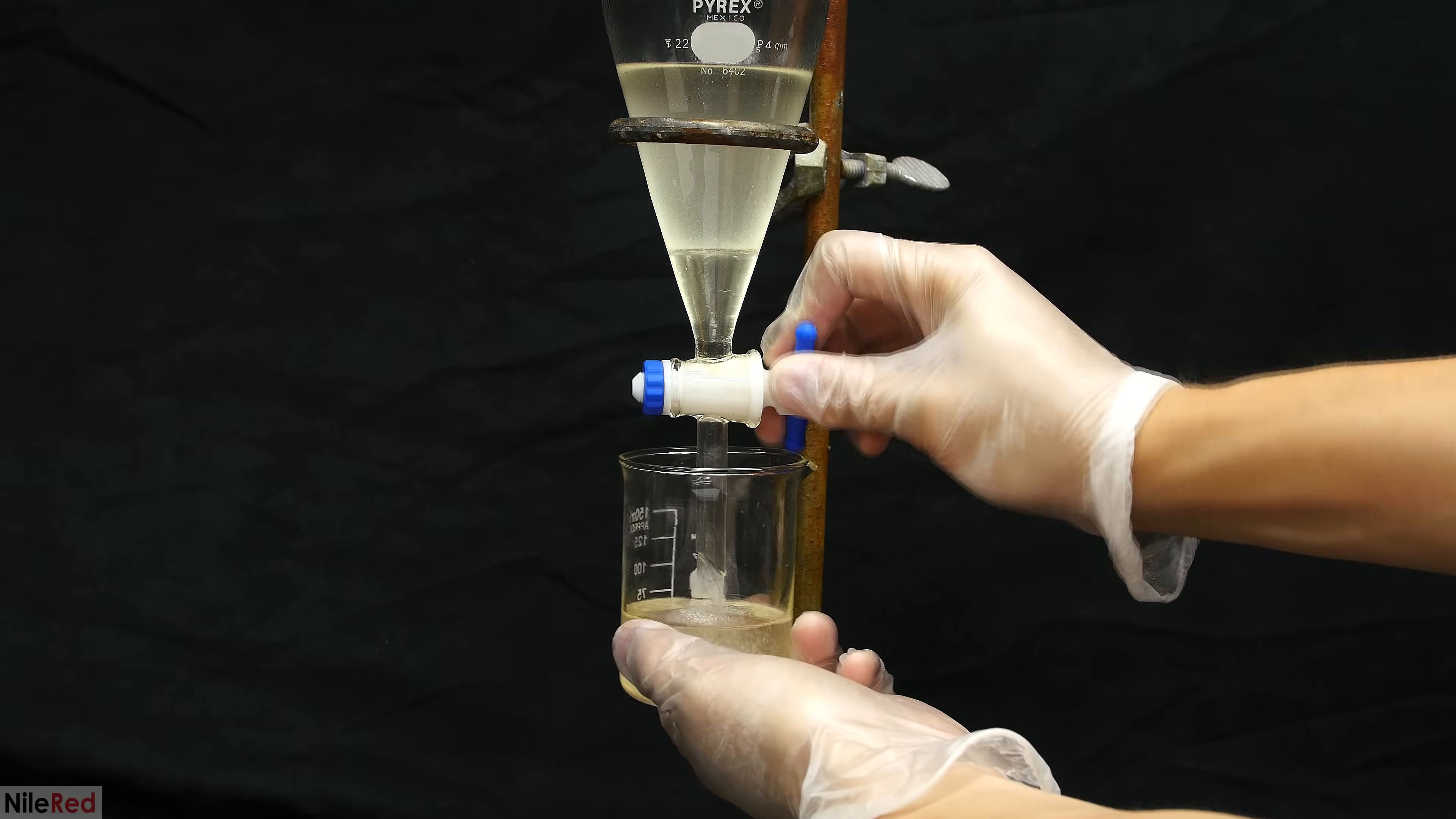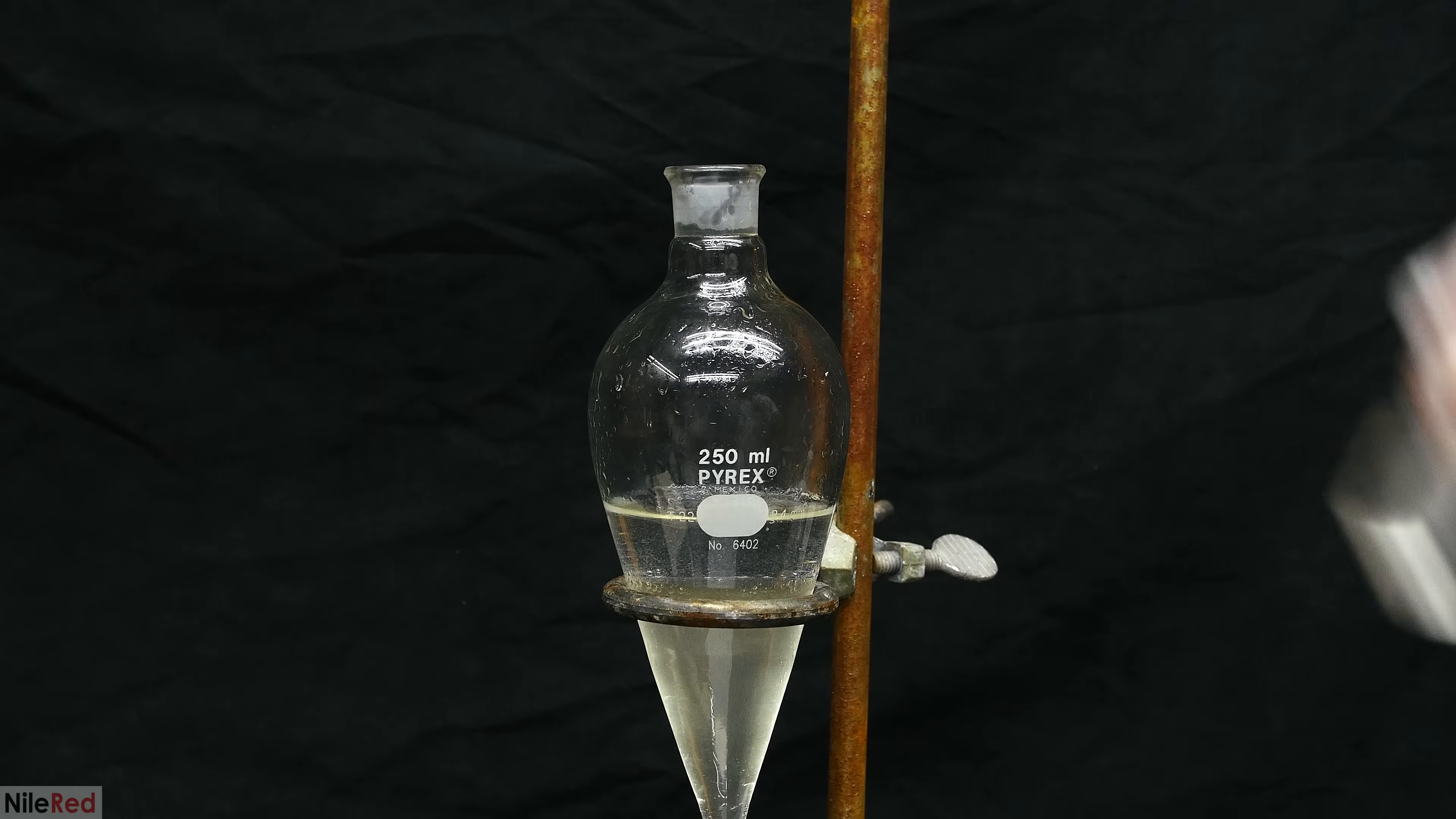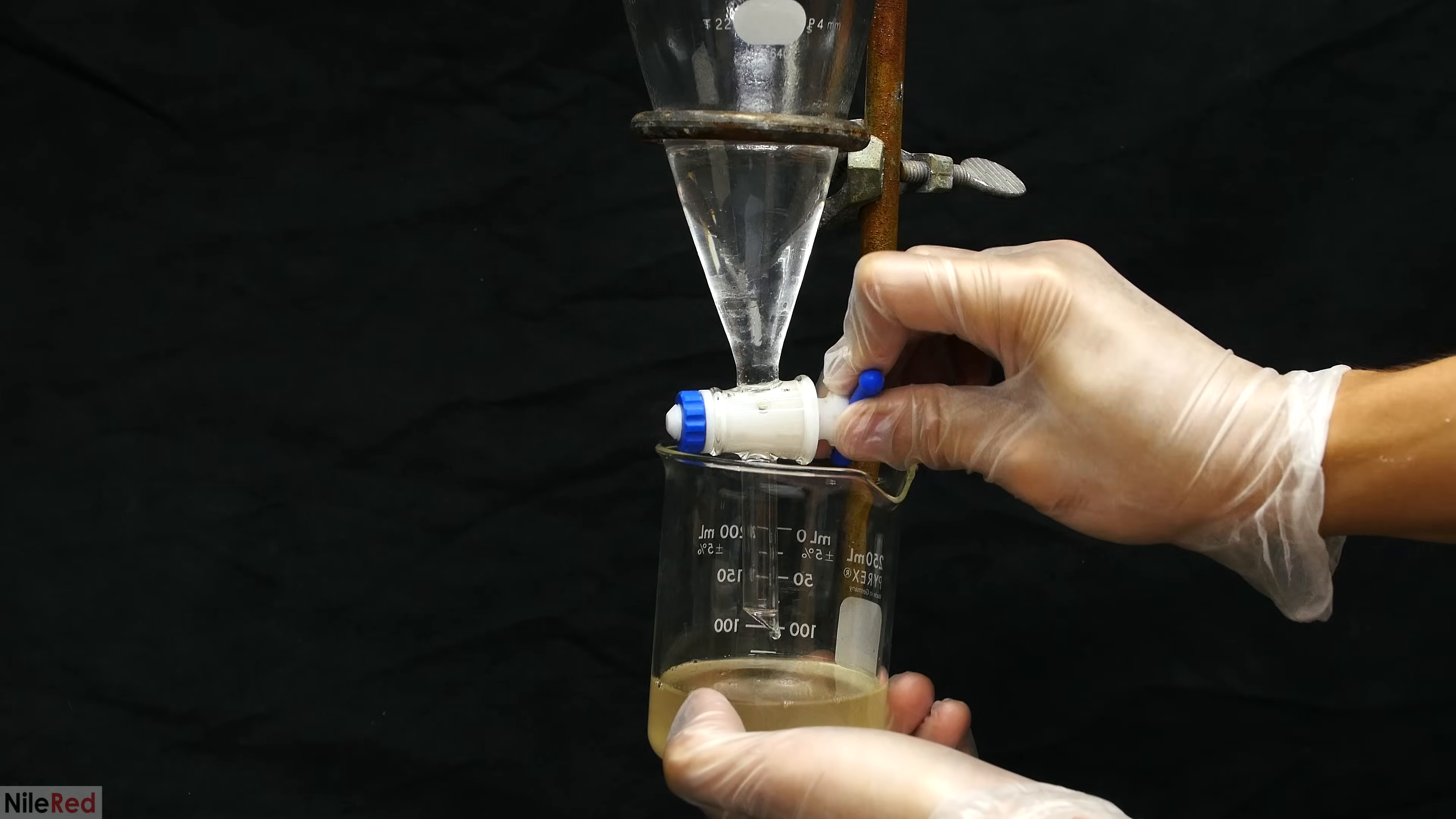Once the layers have separated, I drain off the lower DCM layer and I dispose of the upper basic aqueous layer. Again, the separatory funnel is cleaned, and I pour back in the anisole DCM solution. On top of this, we add in 50 milliliters of water. The purpose of this step is to wash out any phenol that still might be left behind. Phenol is much more soluble in water than it is DCM, so it should migrate to the water layer. After the layers have separated, the lower DCM layer is drained into a beaker. The DCM layer here is a little bit cloudy due to the presence of water.